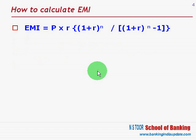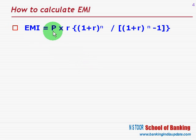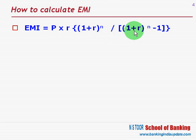First of all we shall calculate it by using a mathematical formula. EMI (equated monthly installment) is equal to: Principal multiplied by r times (1 + r) raised to power n, divided by (1 + r) raised to power n minus 1. This is the formula we are going to use to calculate EMI.